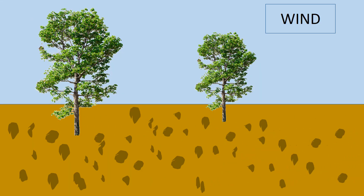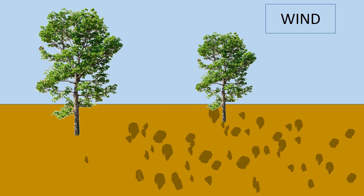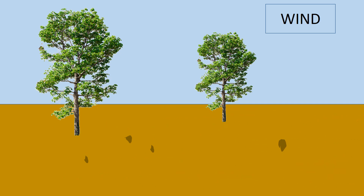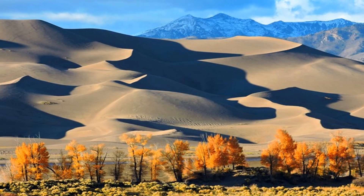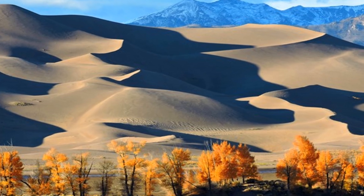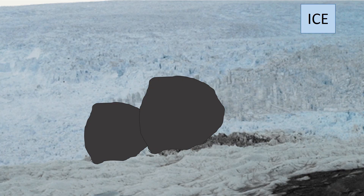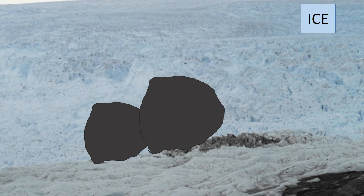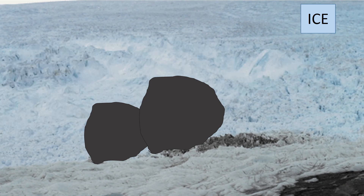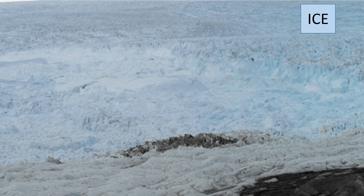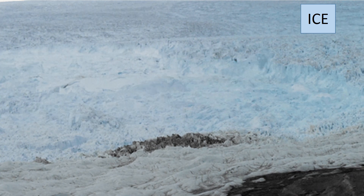Wind erosion can move large quantities of small rocks and soil from their original locations to a new place, and create impressive formations such as sand dunes. Ice can move much larger rocks than most other erosive forces, though erosion by ice is rare in most parts of the world.